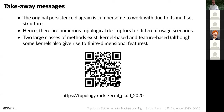The takeaway from this lecture: there is the original persistence diagram structure which is cumbersome to work with due to its multi-set structure and lack of a well-defined mean. There are numerous topological descriptors for different usage scenarios — two classes: kernel-based and feature-based, though some kernels give rise to finite-dimensional features making the boundary blurry. That is roughly where the field is at the moment, and I'm happy to take any questions.